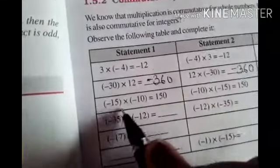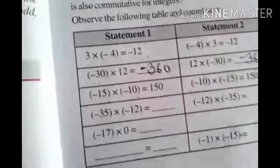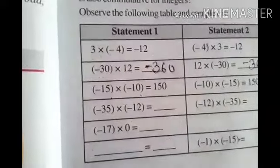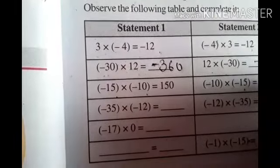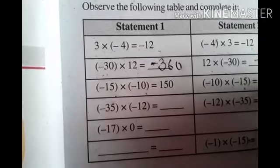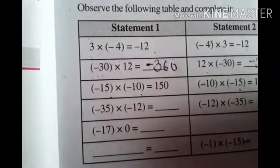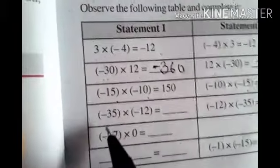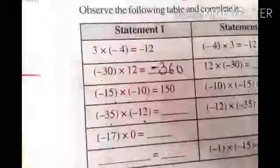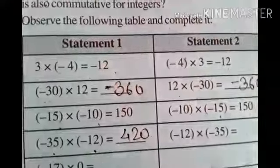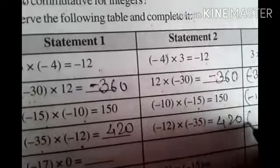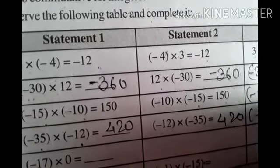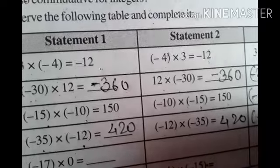Next example: minus 15 into minus 10 is equal to 150. Reversed: minus 10 into minus 15 is equal to 150. We can say that minus 15 into minus 10 is equal to minus 10 into minus 15. Next example: minus 35 into minus 12 is equal to 420. Minus 12 into minus 35 is equal to 420. We can say that minus 35 into minus 12 is equal to minus 12 into minus 35.